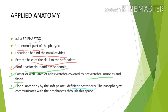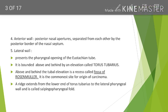The anterior wall is formed by the posterior nasal apertures, also known as the choanae, and they are separated from each other by the posterior border of the nasal septum.